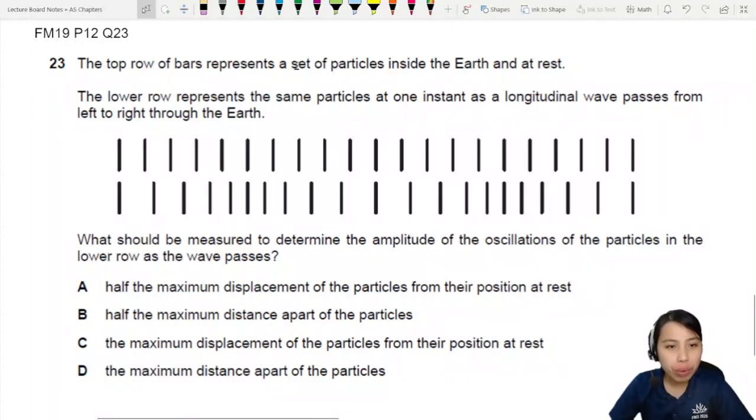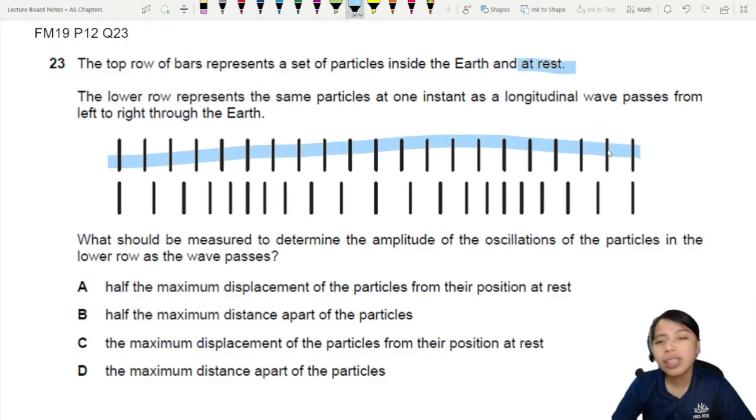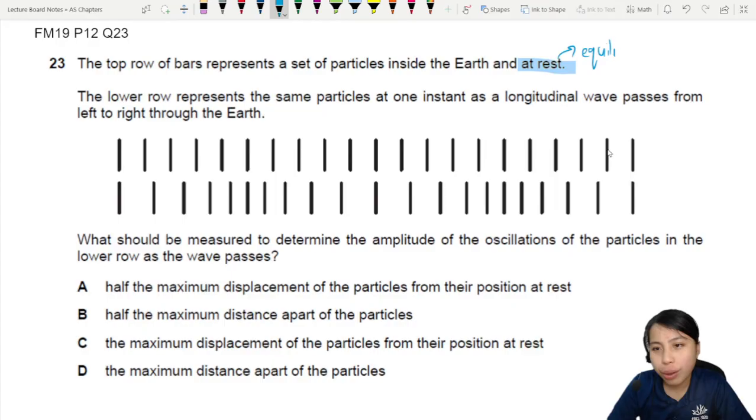In this question, the top row of bars, which is all these ones up here, represent a set of particles at rest. So we look at all these ones here, they are just chilling at equilibrium position. So at rest means at equilibrium.